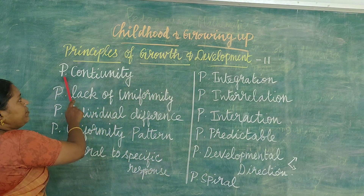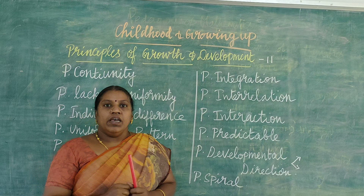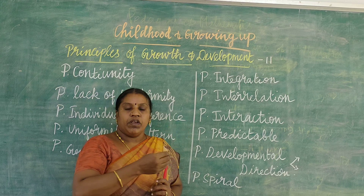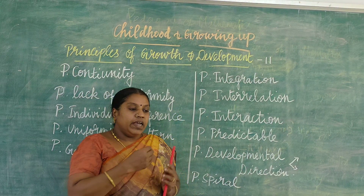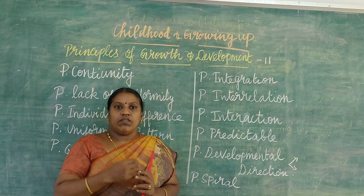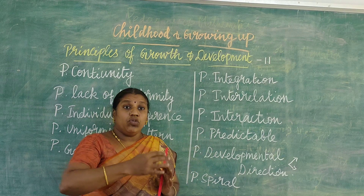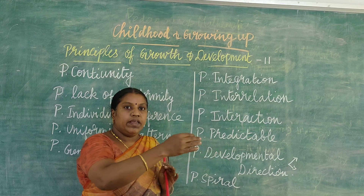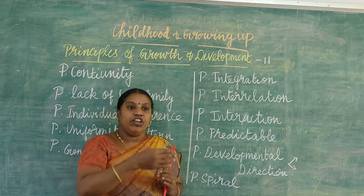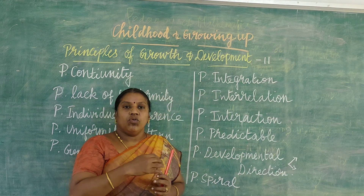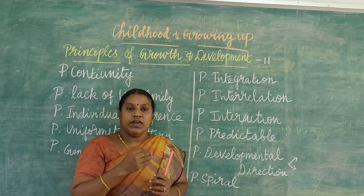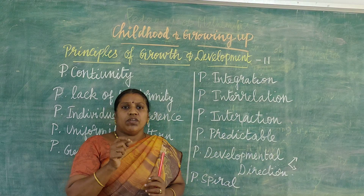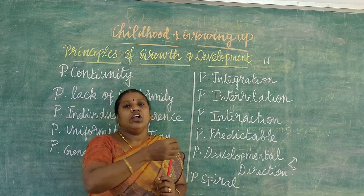The first principle is the principle of continuity. Growth is a continuous process — from the infant stage, you grow up later. In the initial stages, during early childhood (2 to 6 years), growth is very rapid. Then in later childhood it reduces. Again at the puberty stage, your growth is enhanced. Development proceeds from conception, and though sometimes growth is very small or larger in amount, it is a continuous process.